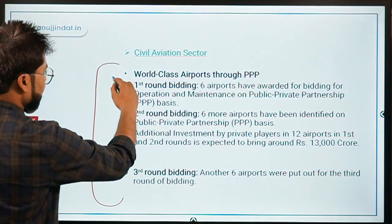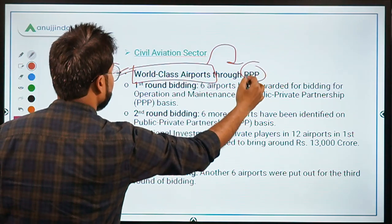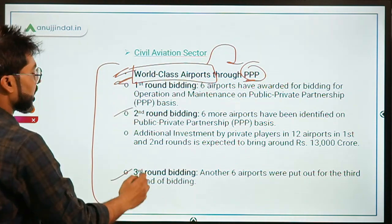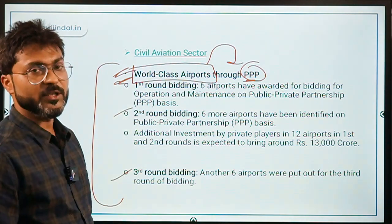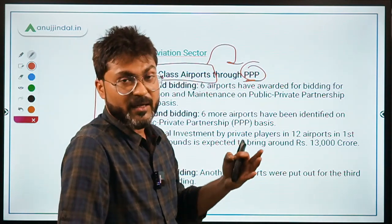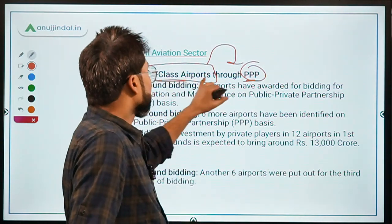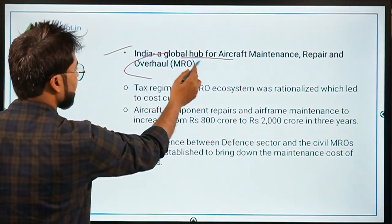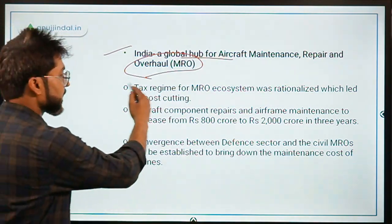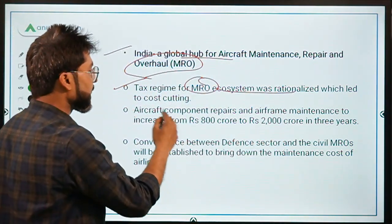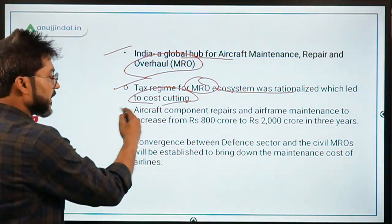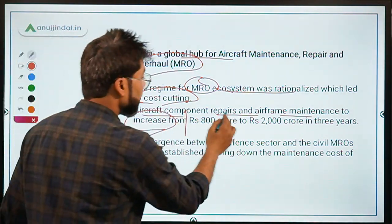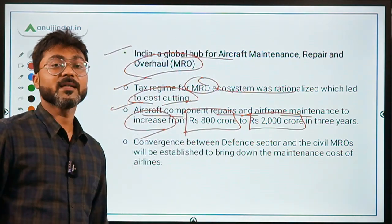For civil aviation, world-class airports will be built through public-private partnership mode. India is to be made a global hub for aircraft Maintenance, Repair, and Overhaul (MRO), with the tax regime for the MRO ecosystem rationalized. Aircraft component repairs and airframe maintenance were announced to increase from ₹800 crore to ₹2,000 crore over the next 3 years.